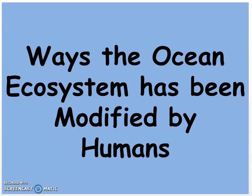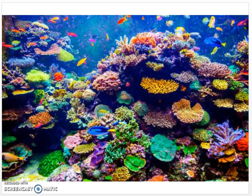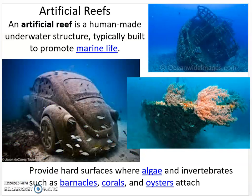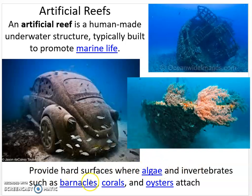Ways the ocean ecosystem has been modified by humans: The first way is by creating artificial reefs. An artificial reef is a human-made underwater structure typically built to promote marine life. The word marine means water, and refers to the life that lives there. These reefs provide hard surfaces where algae and invertebrates such as barnacles, corals, and oysters can attach.